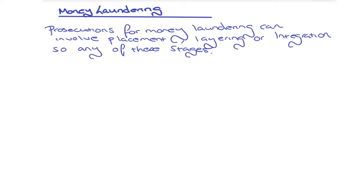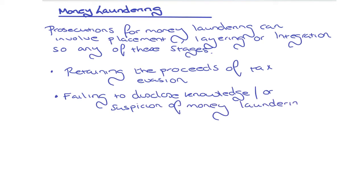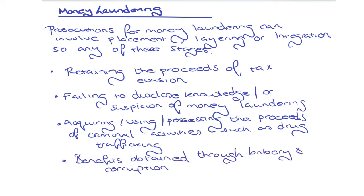There are a few other criminal offences relating to money laundering to look at. These include: retaining the proceeds of tax evasion, where individuals are deliberately avoiding tax and keeping that money; failing to disclose knowledge or suspicion of money laundering; acquiring, using, or possessing the proceeds of criminal activities such as drug trafficking; benefits obtained through bribery and corruption; and tipping off, where information is disclosed to a suspect of an investigation by someone who knows a police investigation into money laundering has begun or is about to begin.